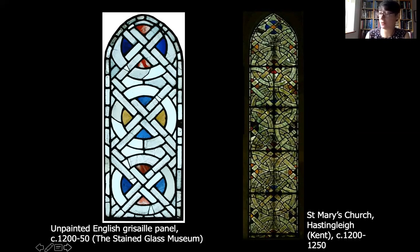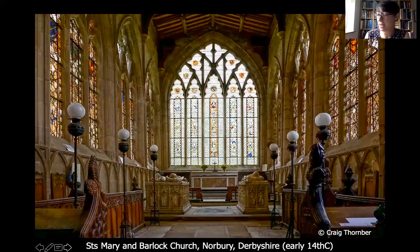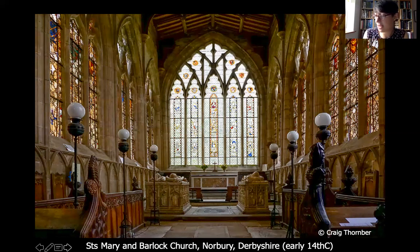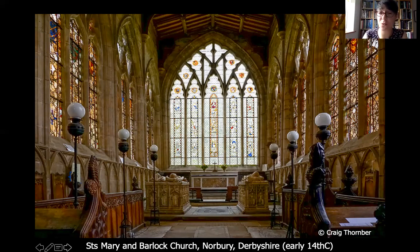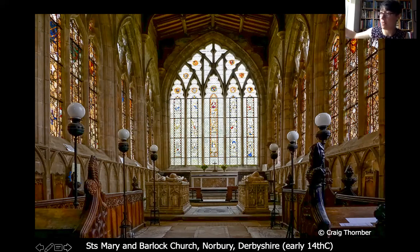There's a stunning example of the use of grisaille glass at the parish church in Norbury, Derbyshire, which shows how this predominantly clear glass let in a lot more light into the churches. In the 14th century this had a very practical function - it also highlighted the architecture and flooded the chancel with light. That's very important because at the east end of the church was where the priest would celebrate the Mass, the Eucharist, and it's thought that this grisaille glass at the east end would make that more visible to the people in the church. There's a deliberate significance to the choice of glass, thinking about space and liturgy.